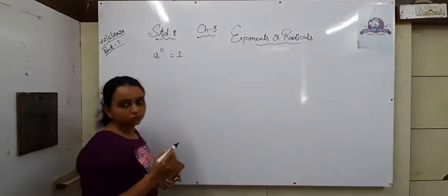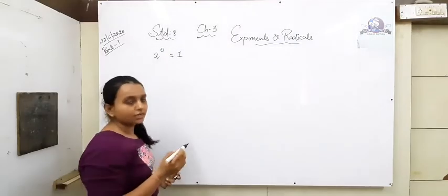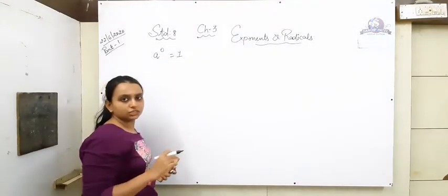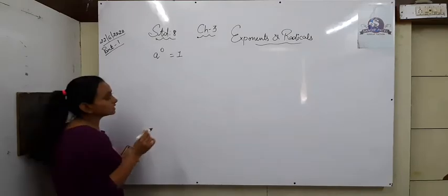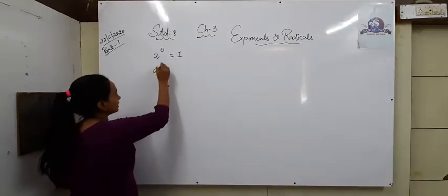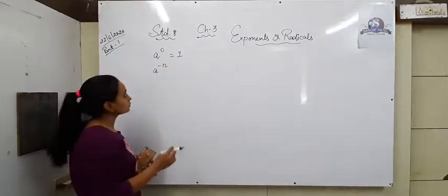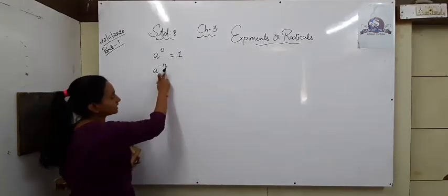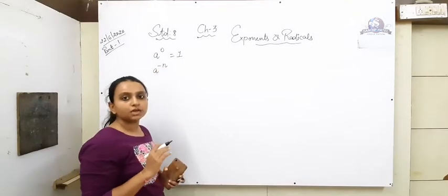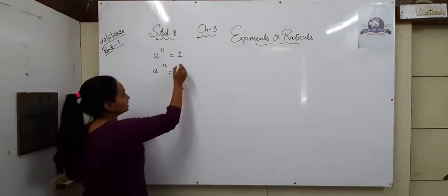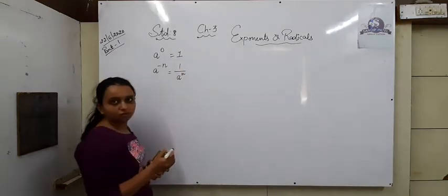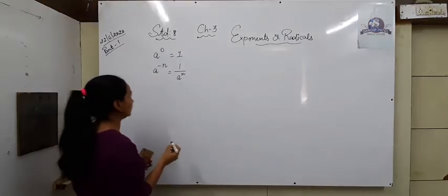A raised to 0 is equal to 1. So when the power is 0, what is the value of a number? 1. Then negative exponent: A raised to minus n. A negative exponent — this negative means the value is 1 upon A raised to n.